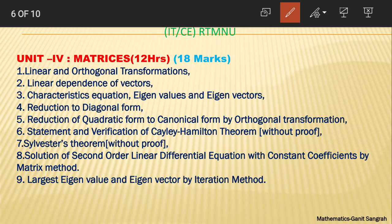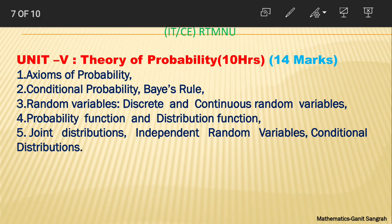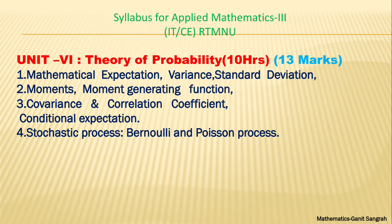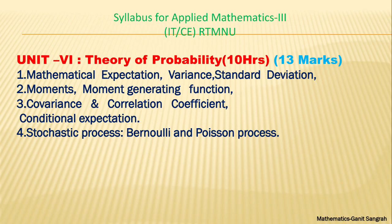In Theory of Probability, confirm the Bayes' rule and conditional probability topic. Then in Mathematical Expectation, do mathematical expectation, variance, and standard deviation — you'll get 6 or 7 marks easily. So if you consider all this, near about 45 to 50 marks are easily available in Applied Mathematics 3. Do these topics well, and this is sufficient.